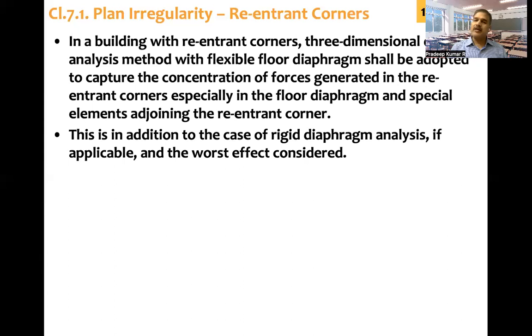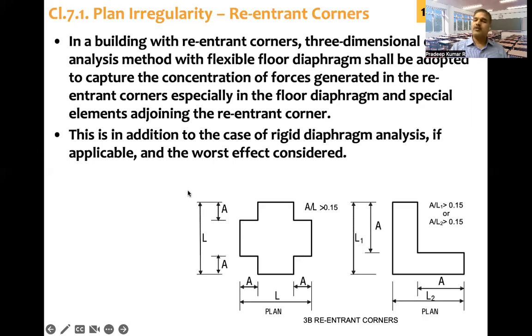When it comes to tall buildings, the tall building code is putting more restriction. It should be preferably rectangular or elliptical. It is discouraging re-entrant corners in the plan geometry of the structure.